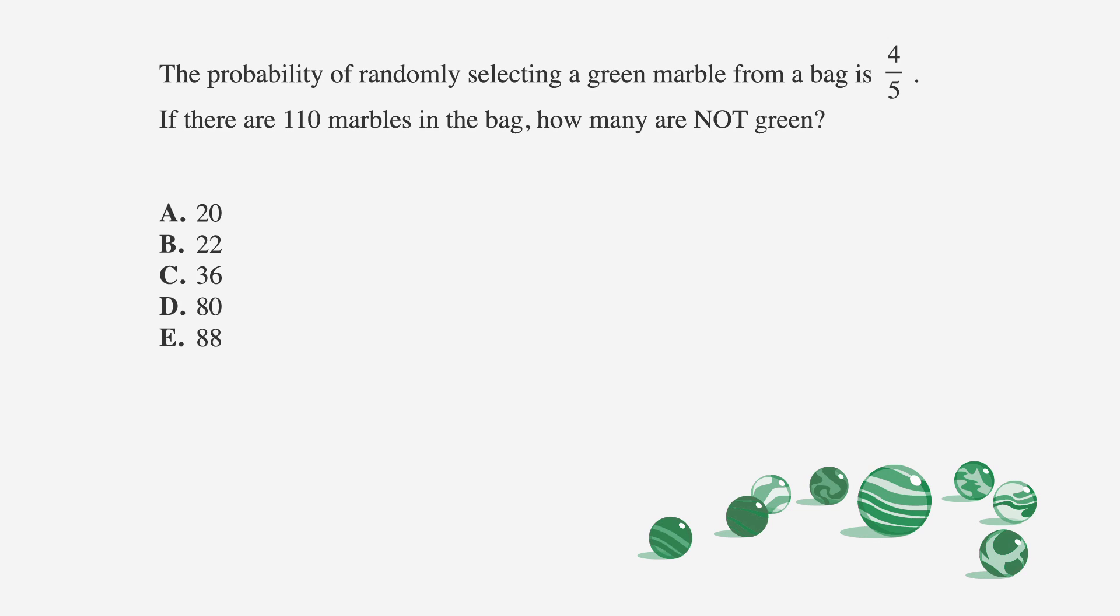Alright, here's the question. The probability of randomly selecting a green marble from a bag is 4/5. If there are 110 marbles in the bag, how many are not green? A is 20, B is 22, C is 36, D is 80, and E is 88. Ready, set, pause.